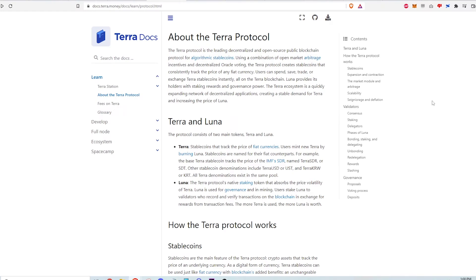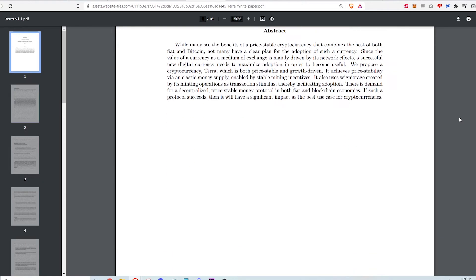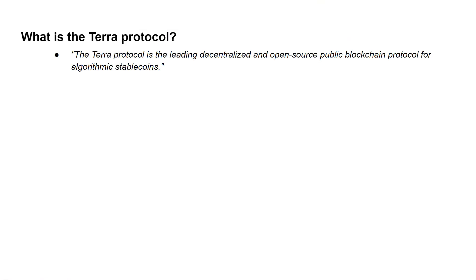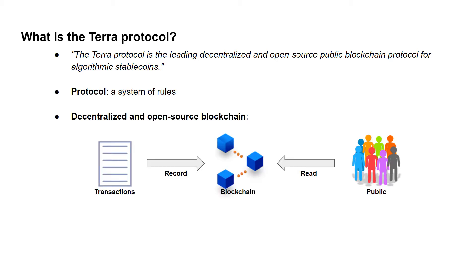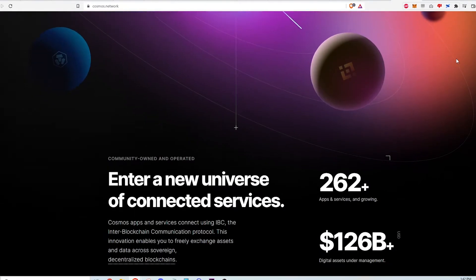First off, what is the Terra Protocol? Everything in this video can be referenced back to the Terra Protocol's documentation and white paper. From the documentation, I quote: the Terra Protocol is the leading decentralized and open-source public blockchain protocol for algorithmic stablecoins. A decentralized and open-source blockchain is just an unchangeable public ledger of transactions that isn't owned by a single entity — like a bank's database of transactions and balances, except everyone can see everything and its truthfulness is maintained by many parties.